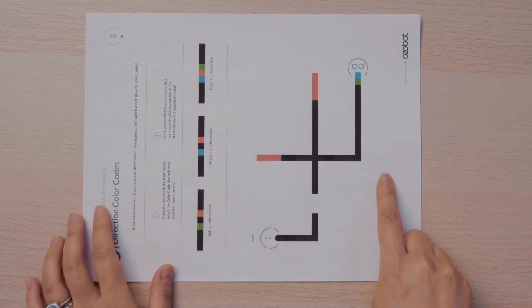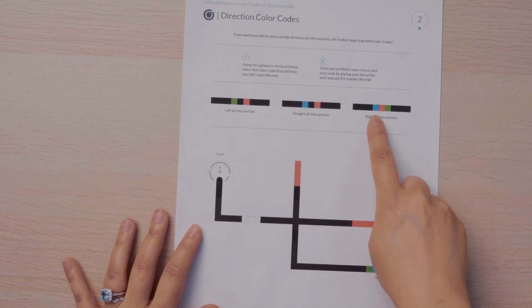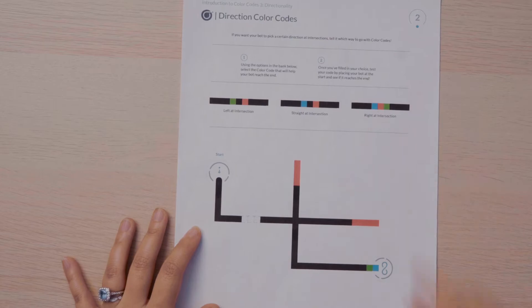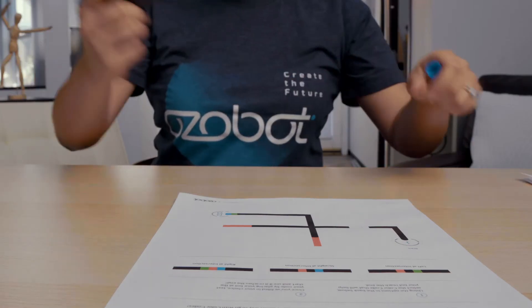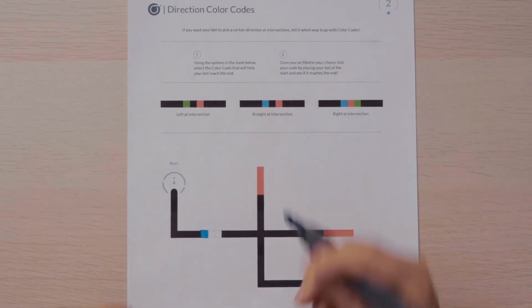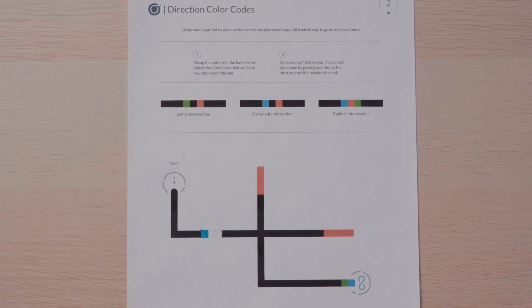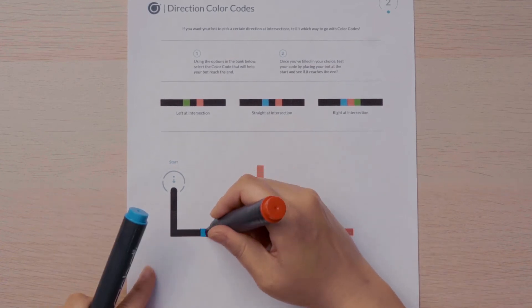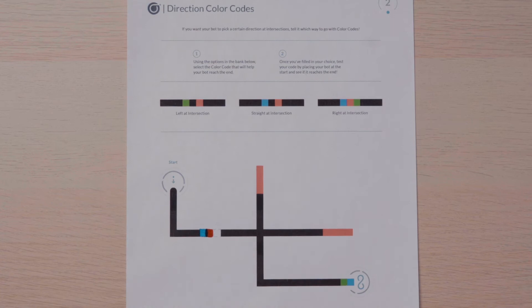That's right. I need to code it to turn right, which means looking back at my color codes, I need to use the right at intersection color code: blue, red, green. So I'll start with my blue marker, then I'll move to red, and I'll end with green.